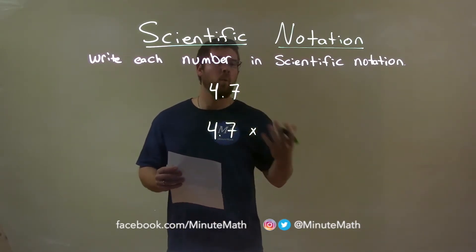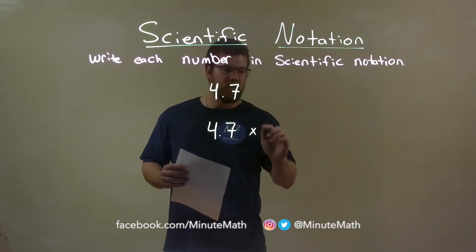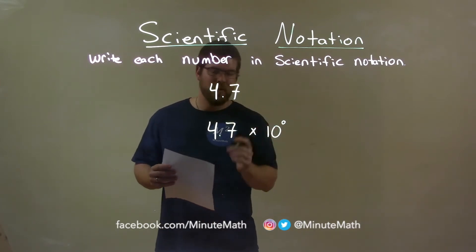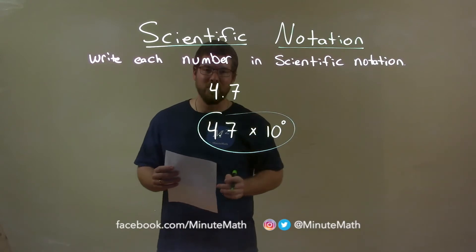Well, we multiply by 1, right? When we multiply it by 1, it doesn't change anything. So, if I put times 10 to the 0 power, which is essentially 1, we now have our final answer of 4.7 times 10 to the 0 power.